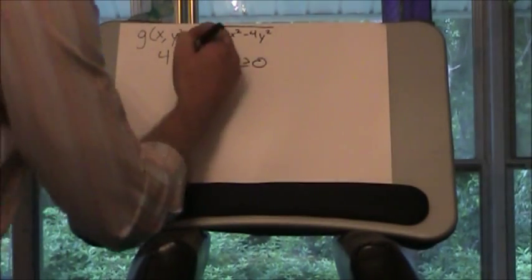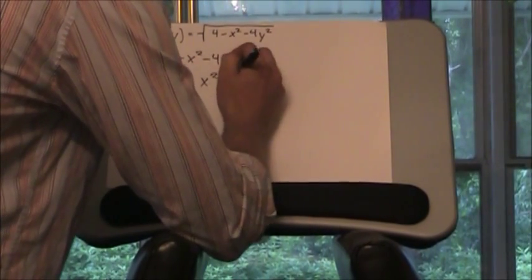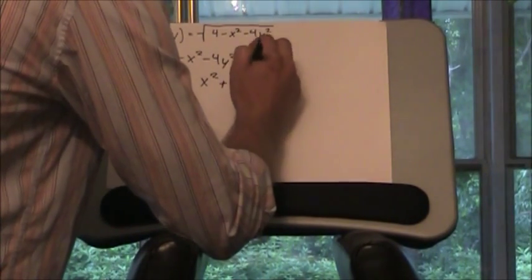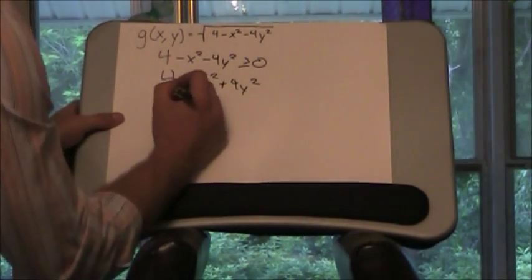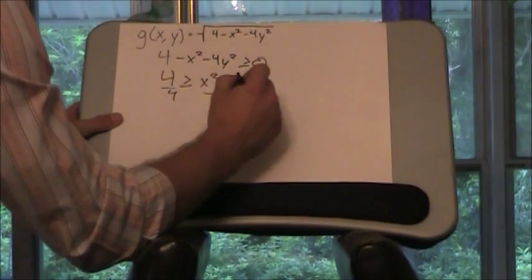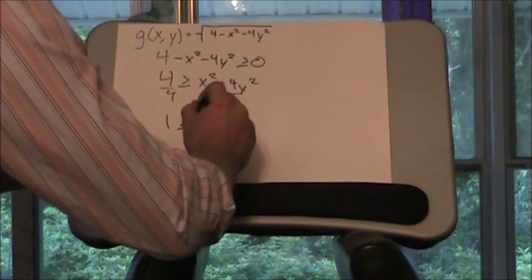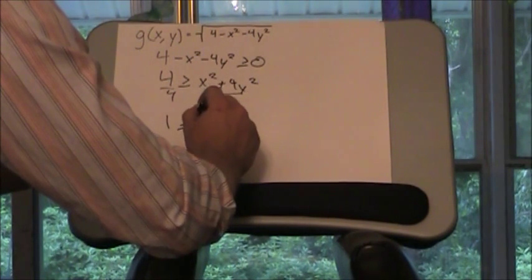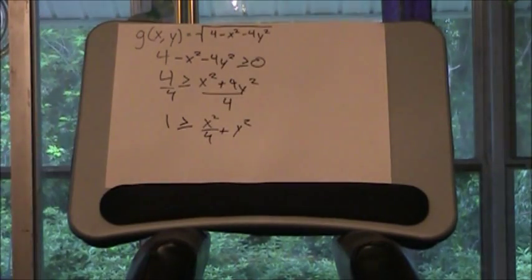And so we're going to start by bringing these over, so it's going to be 4 is greater than or equal to x squared plus 4y squared. And now we want this number to be a 1, so we're going to divide both sides by 4, and we're going to get 1 is greater than or equal to x squared over 4 plus y squared.